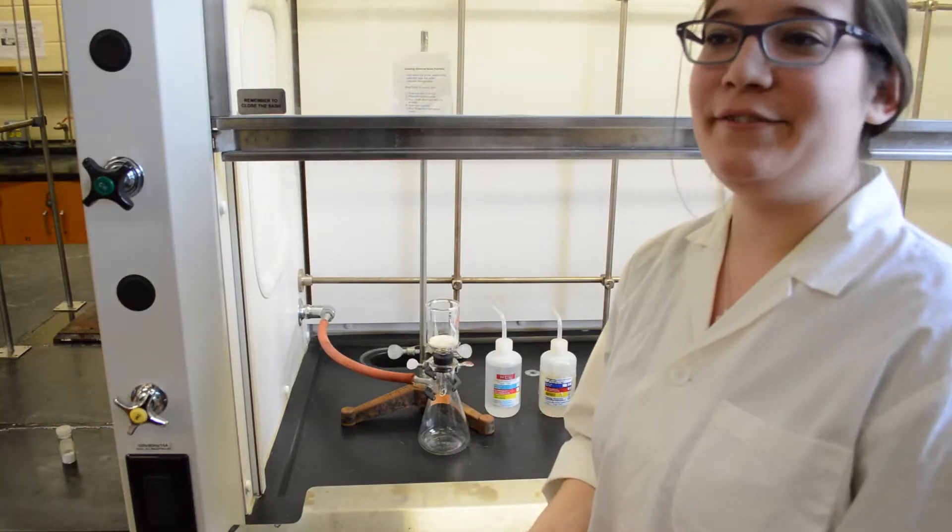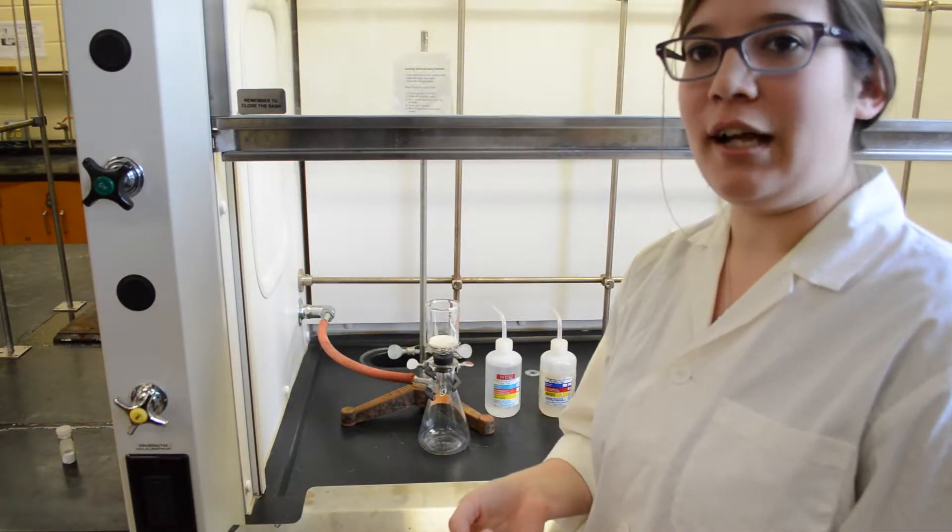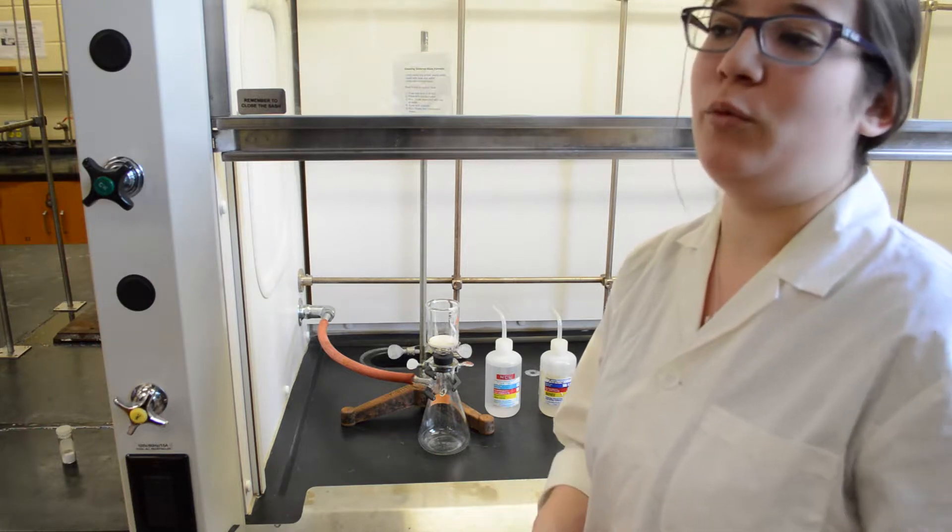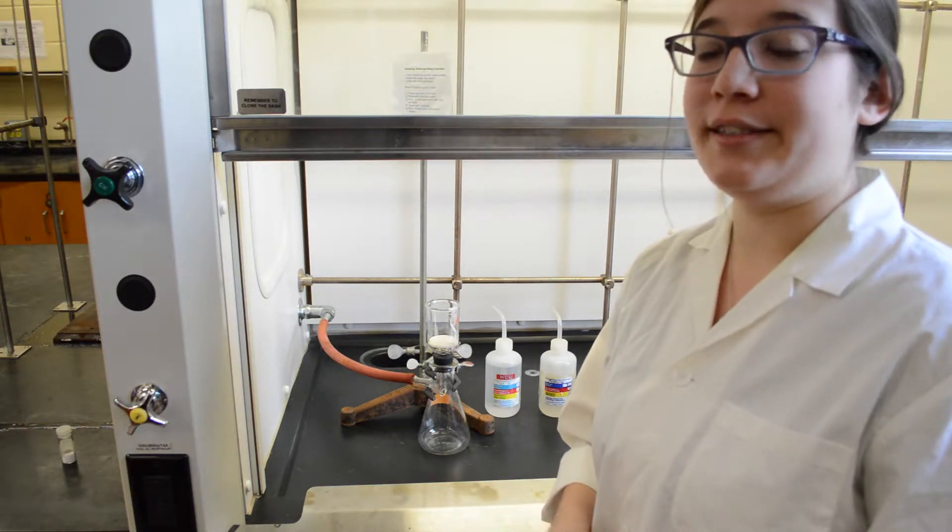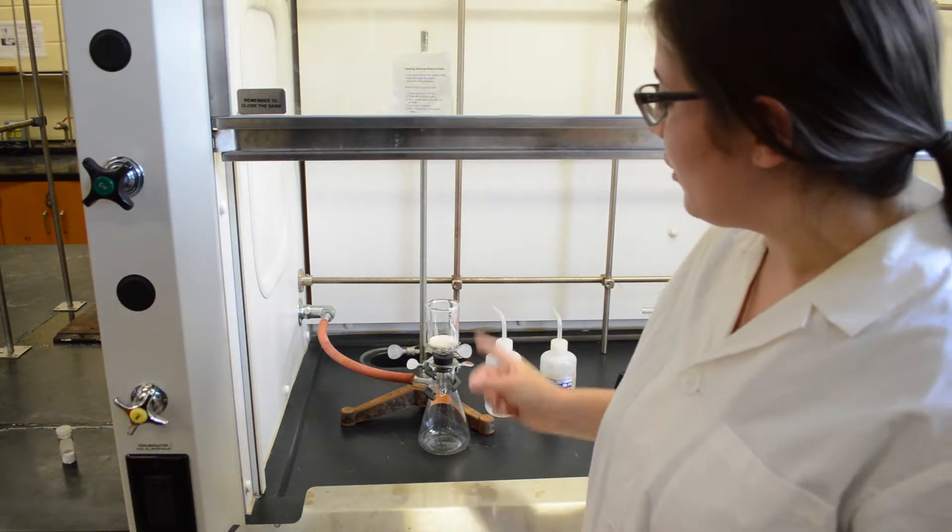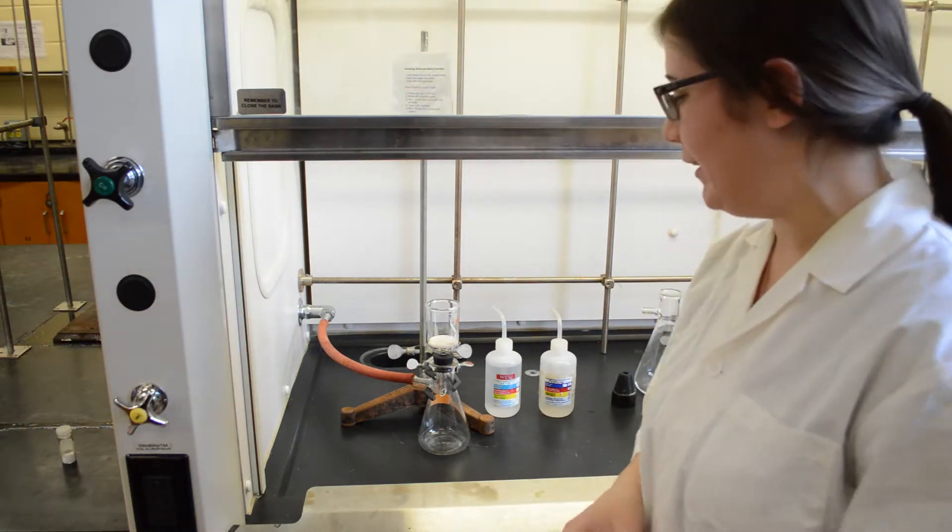Once you're done using your sintered glass funnel, first rinse the excess solid into the appropriate waste bottle and wash it with warm soapy water in the sink and then some distilled water. Then you can bring it over to the sintered glass funnel cleaning station.